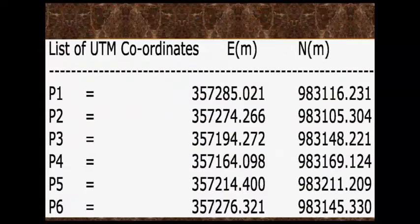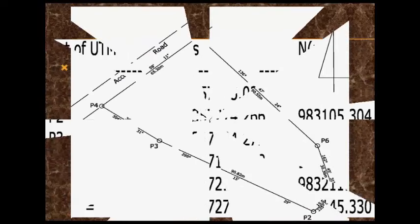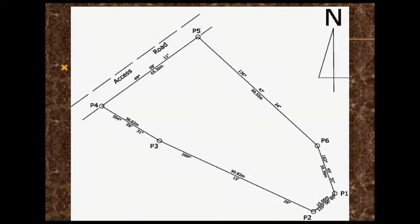It is assumed that we have surveyed a plot of land bounded by 6 points, as displayed on your screen, and we have calculated or computed their coordinate values in Easting and Northing as displayed on your screen. At the end of this video, we are going to use AutoCAD to plot these UTM coordinates and plot the area as seen on your screen.